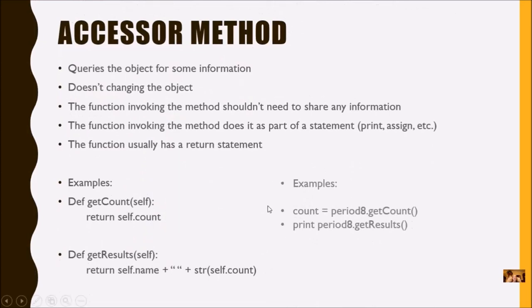The accessor method queries or asks a question of the object for some information — it doesn't usually change the object, only getting information, not changing anything. The function invoking it shouldn't need to share any information, but if it does, it passes it as an argument to a parameter, just like a mutator. The key difference: the function invokes an accessor as part of an assignment statement, and the method usually has a return statement.